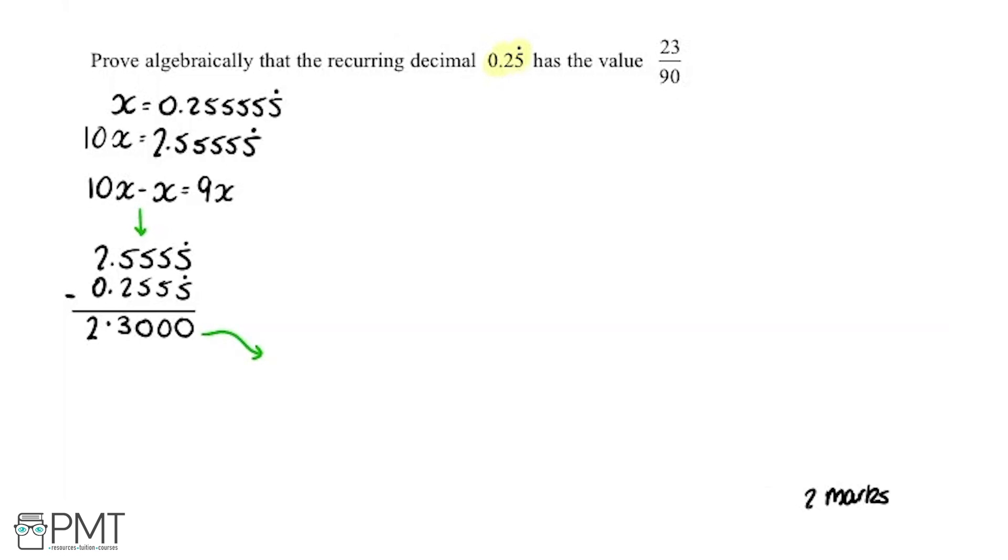From this I can say okay, so now I know that 9x is what we just worked out here, so 2.3. And we've done what we need to, we've got rid of the recurring part. This is just 2.3 and it stops, we don't have any numbers in it like up here with the five that keeps going on and on forever.